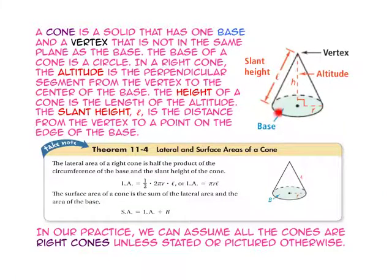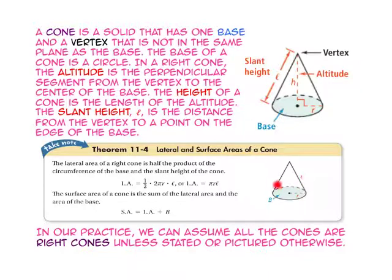A cone is a solid that has one base and a vertex that is not in the same plane as the base. The base of a cone is a circle. In a right cone, the altitude is the perpendicular segment from the vertex to the center of the base. The height of the cone is the length of its altitude. The slant height is the distance from the vertex to a point on the edge of the base. The formula for the lateral area of a cone is pi times the radius times the slant height. The formula for the surface area is the lateral area plus the area of the base: pi·r·L + π·r². In all our examples and practice, we can assume cones are right cones unless stated otherwise.